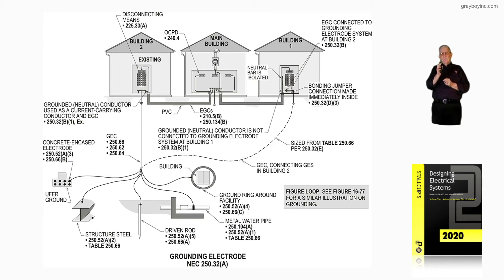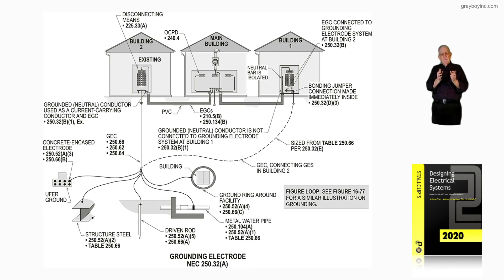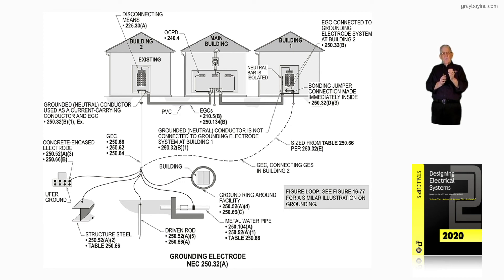If you had a feeder running from a substation up to building number one and you're wanting to determine how many overcurrent devices could be used and installed, you'd go to 225.32 Exception 1. There's no limit, but you would need to review the installation in accordance with the authority having jurisdiction — the plan checker of the city, county, or state — to see what their rules are in relation to 230.71(B)(1) through (4). You'll have to review that section along with 225.32 Exception 1 for those number of mains.